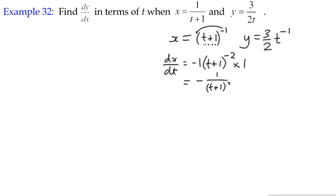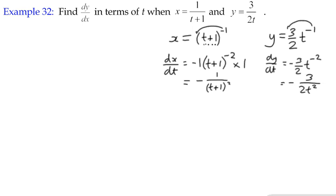dy/dt, I'll just move this over. In the same way, dy/dt is multiplying negative 1, so we've got negative 3 over 2 multiplied by t to the power of negative 2, which is negative 3 over 2t squared.